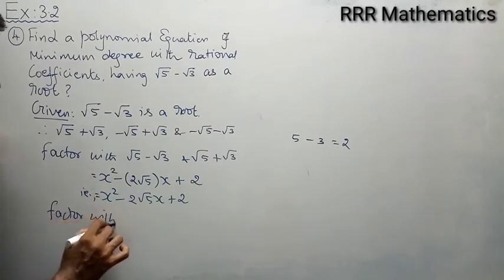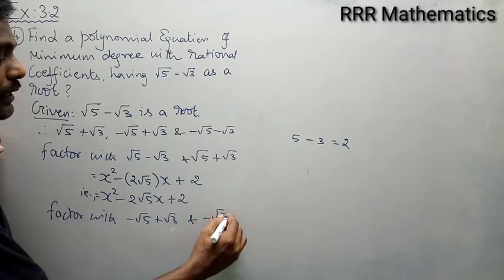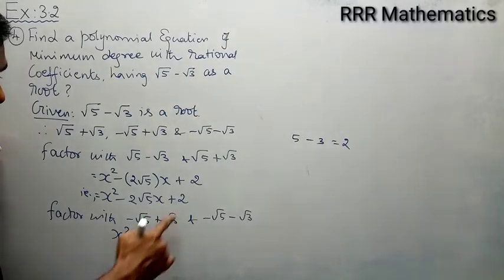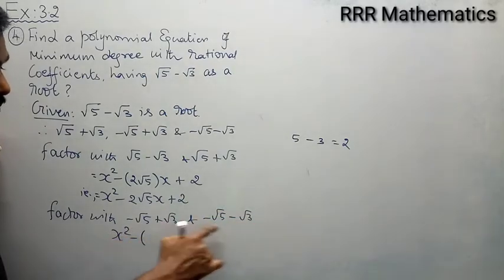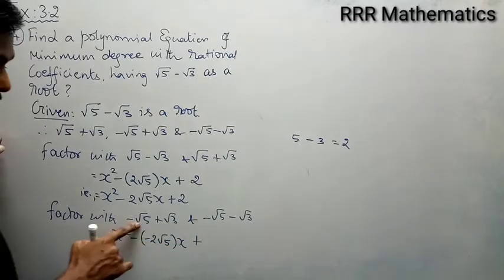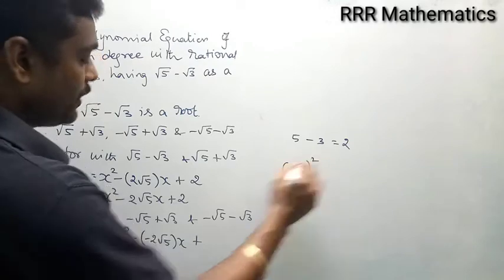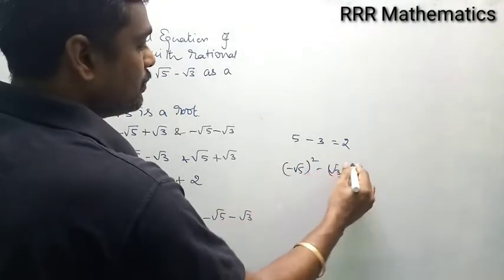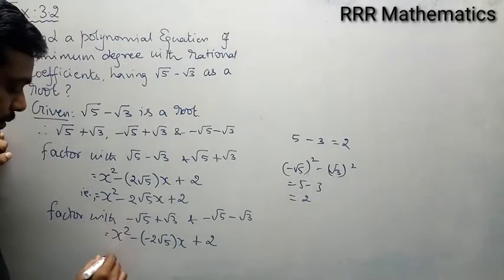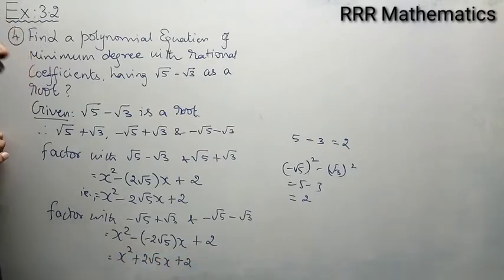Now factor with minus √5 plus √3 and minus √5 minus √3. Therefore x² minus (sum of roots)x plus product. The sum is (-√5 + √3) + (-√5 - √3); the √3 terms cancel giving -2√5. The product is (-√5 + √3)(-√5 - √3) = (-√5)² - (√3)² = 5 - 3 = 2. That gives x² plus 2√5·x plus 2.